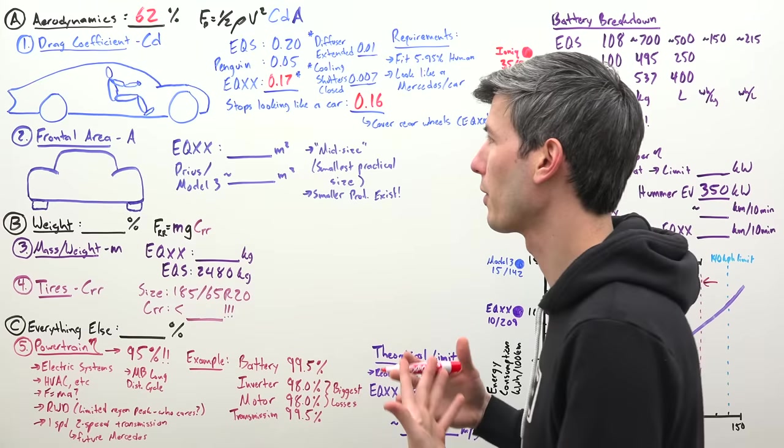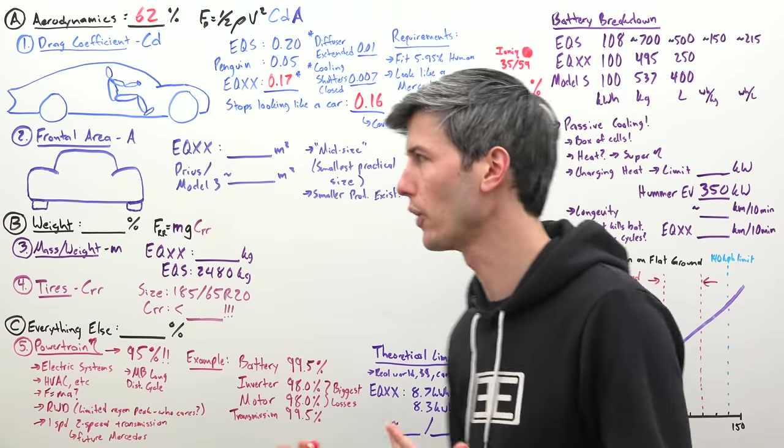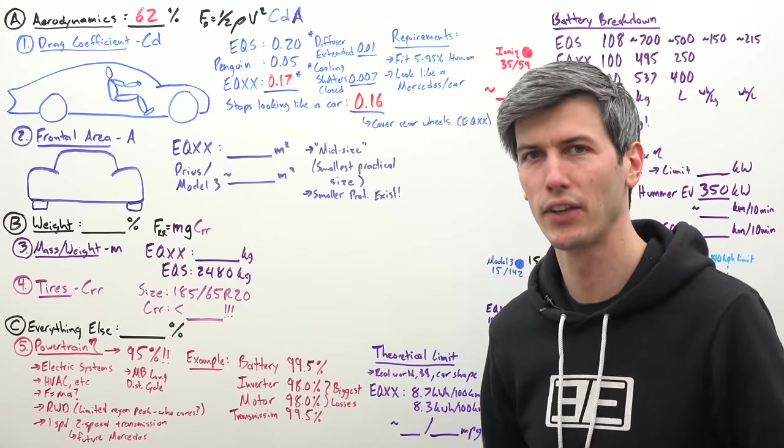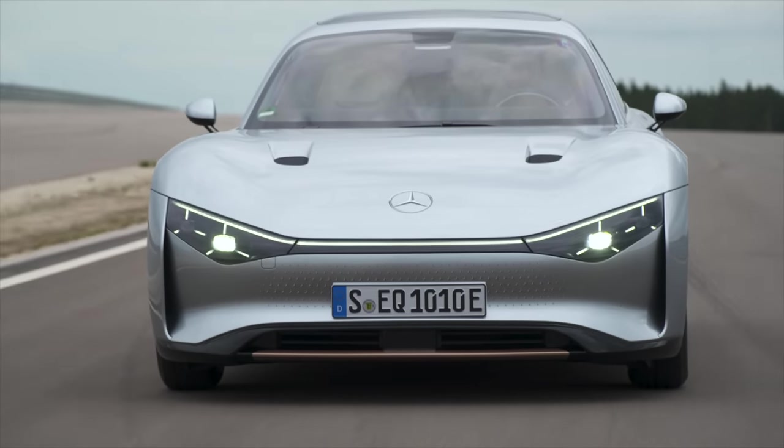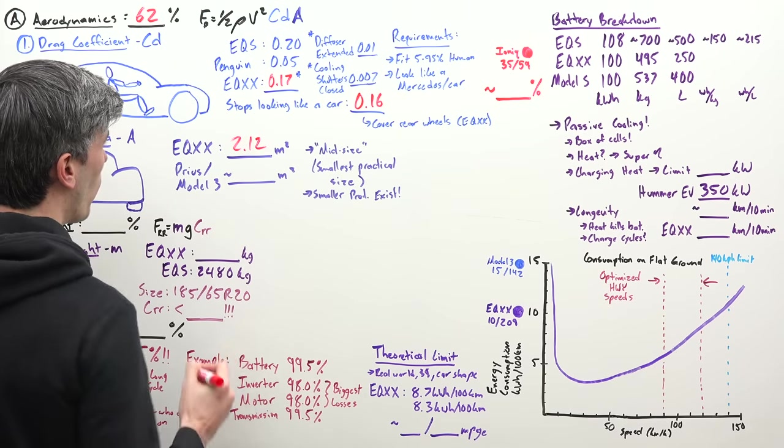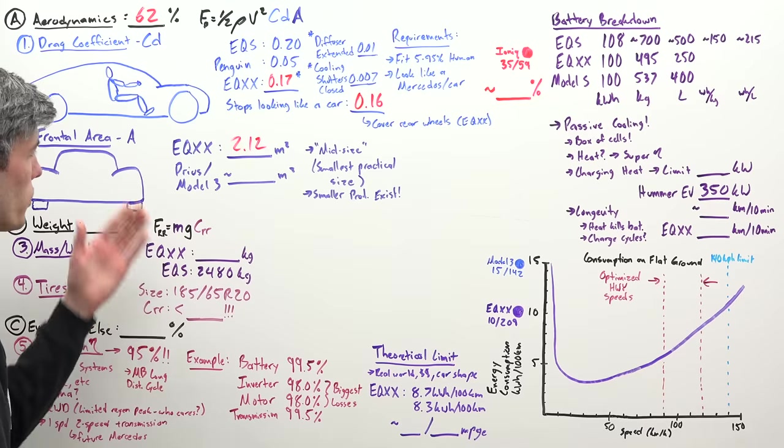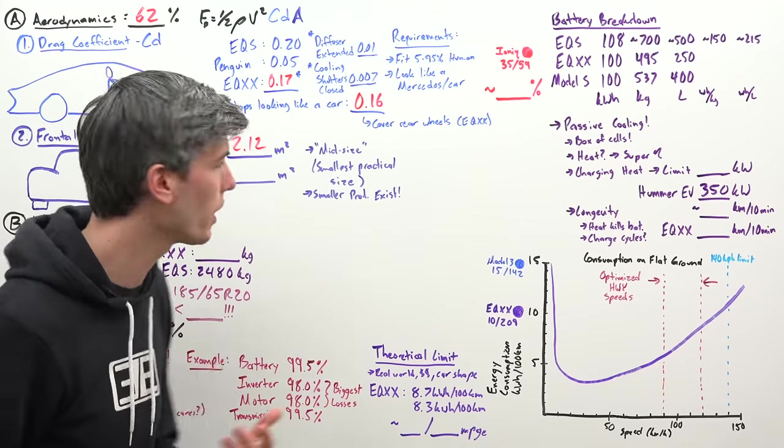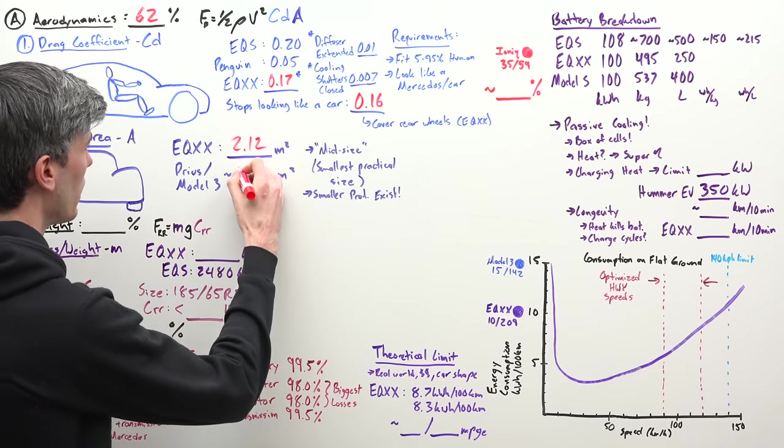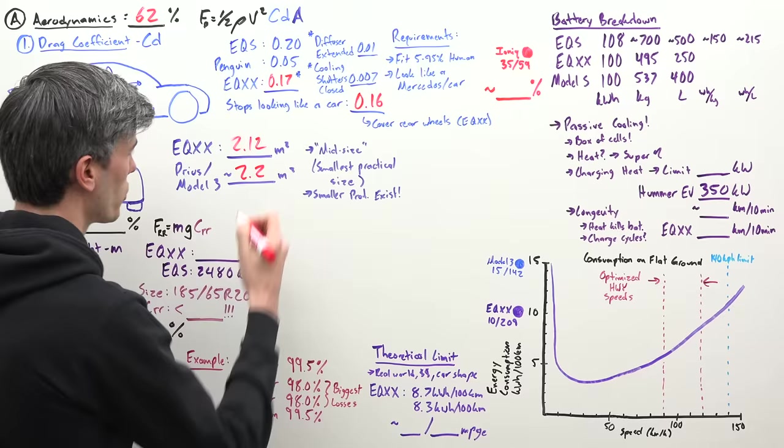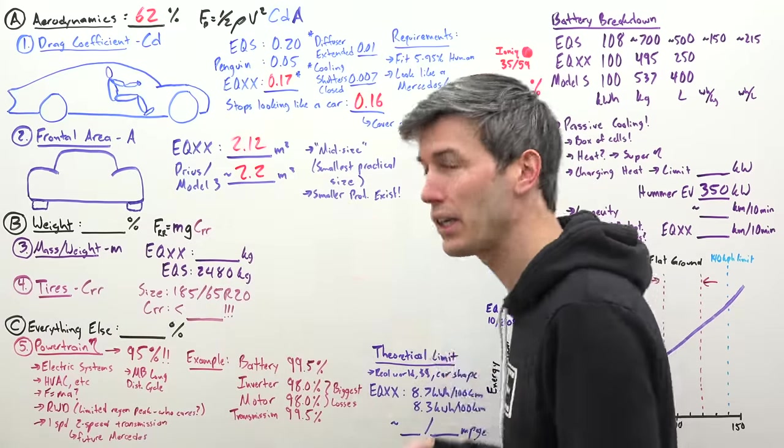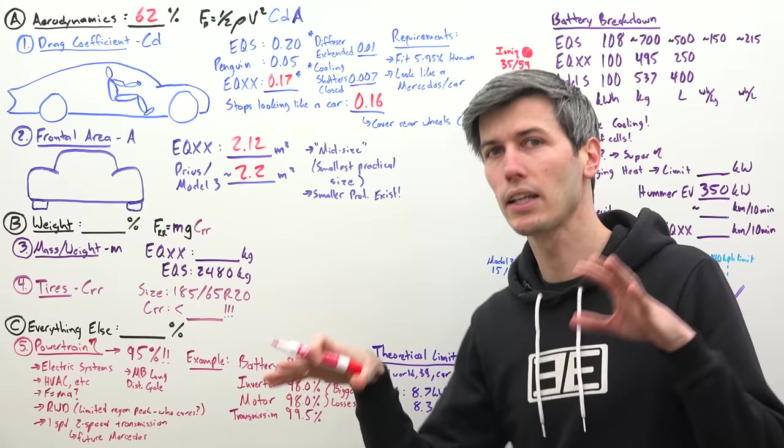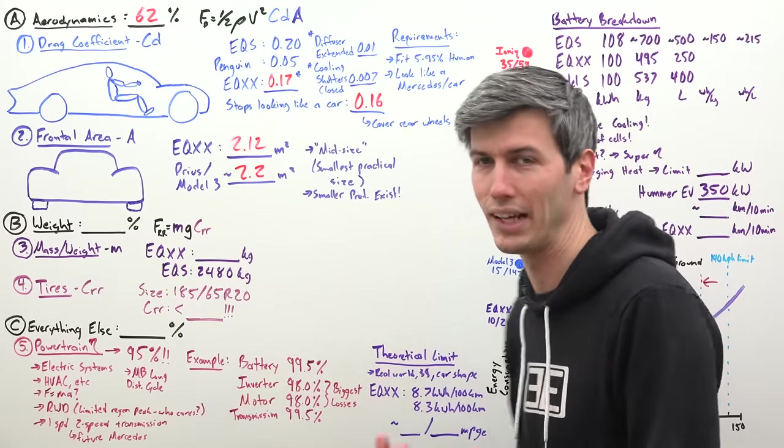The next aerodynamic variable we can play with is frontal area. What I like about this is they kept it realistic. The EQXX has a frontal area of 2.12 meters squared. You can compare that to vehicles like the Prius or Tesla Model 3 which have frontal areas of about 2.2 meters squared. While this is on the low end of a mid-sized sedan, it's basically the smallest practical size.